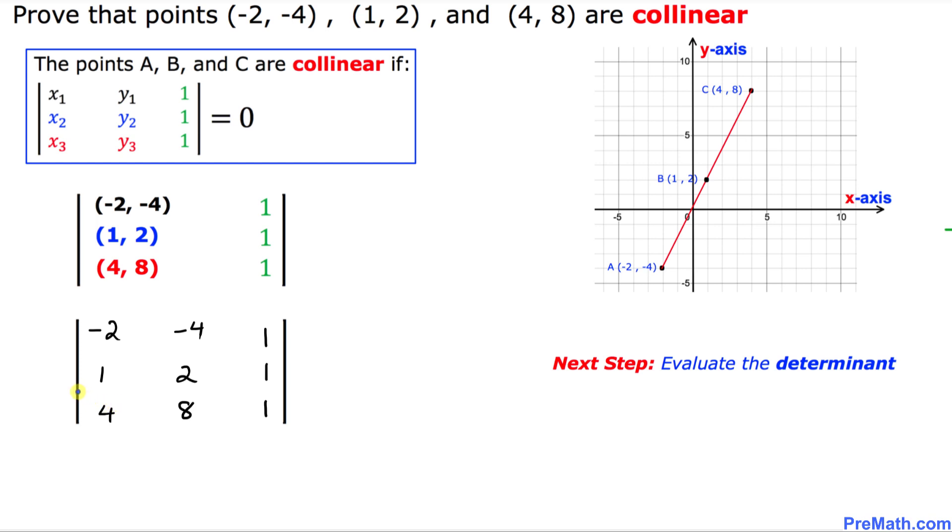Let me show you an easy way to find the value of this determinant. Simply draw this horizontal line right above this last row. Let's crisscross these points.